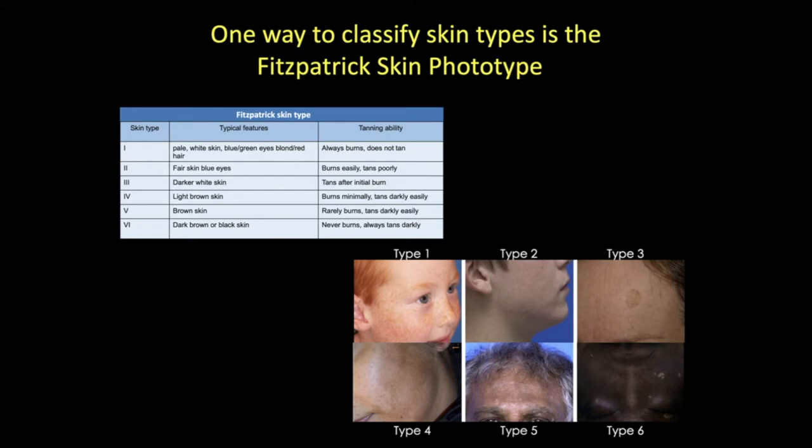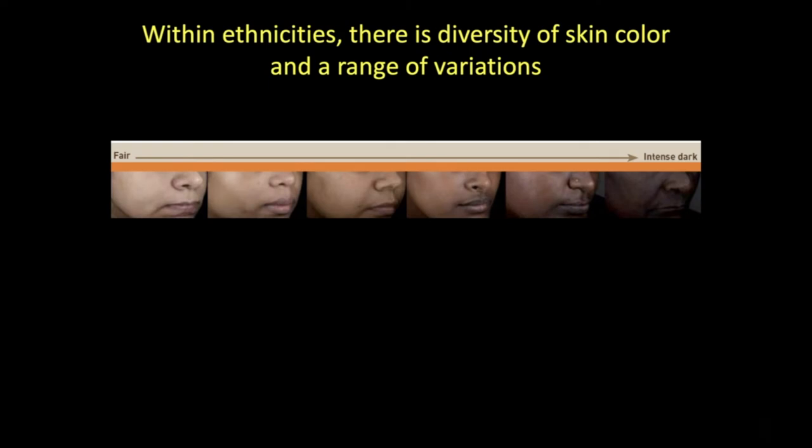It's very important to keep in mind that providers need to be cognizant of conflating social constructs of race and ethnicity with measurements of skin pigmentation. It's clear that more clinically relevant methods for describing skin of color need to be developed, since there's a diversity of skin color and a range of variations even within specific populations.